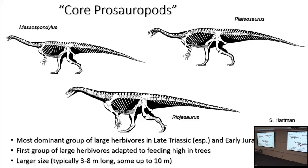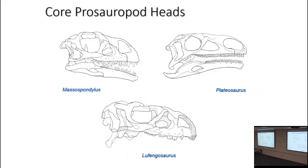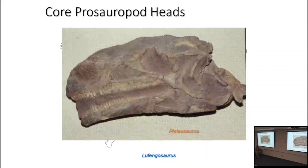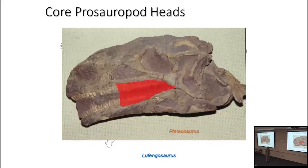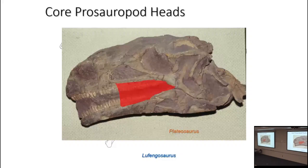Were they still obligate bipeds? That had been a matter of some debate. Here's the skull of some of these forms from this part of the tree. Here's Plateosaurus itself, a specimen at Yale. Some people have looked at ridges on the face and a slight inset of the teeth and suggested, like some ornithischians, maybe it had a cheek — but as with ornithischians the evidence for a cheek isn't particularly strong.